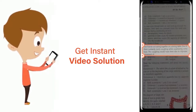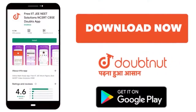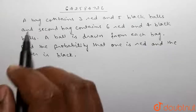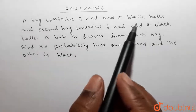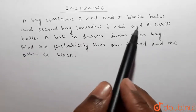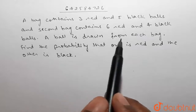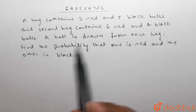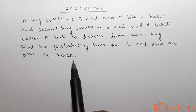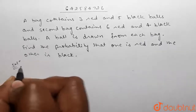A bag contains three red and five black balls, and a second bag contains six red and four black balls. A ball is drawn from each bag. Find the probability that one is red and the other is black.